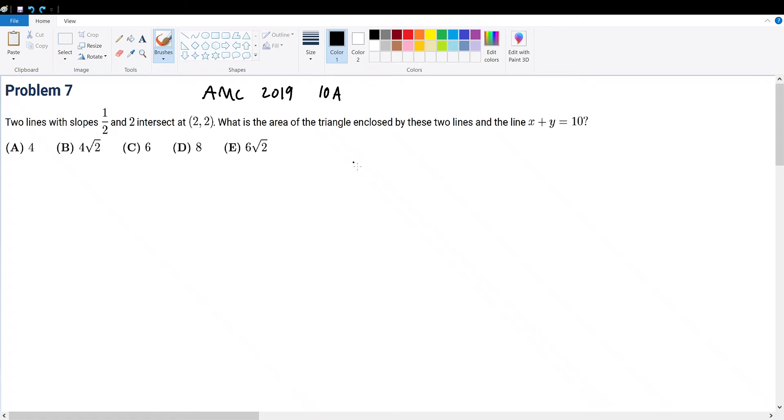AMC 10A 2019 problem 7. Two lines with slopes 1/2 and 2 intersect at (2,2). What is the area of the triangle enclosed by these two lines and the line x plus y equals 10?